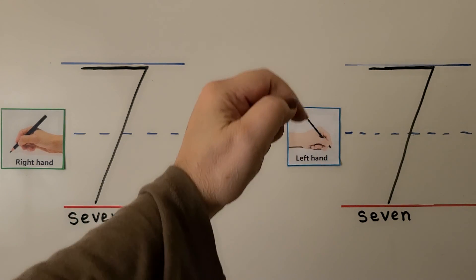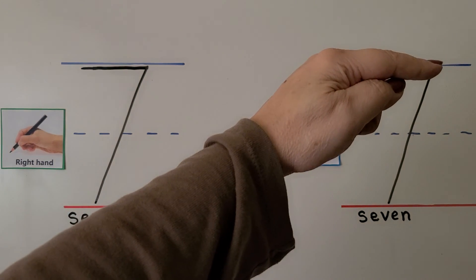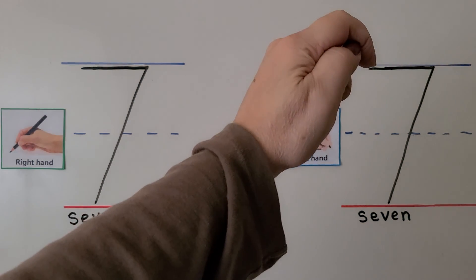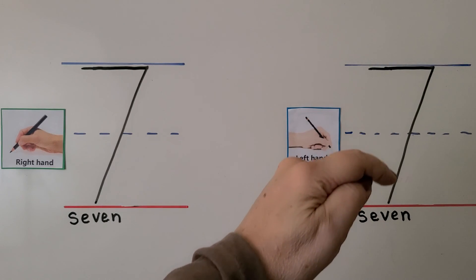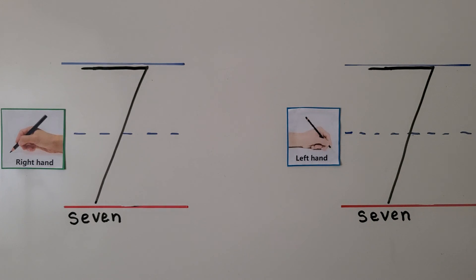Now another way a left hander can do it is they can start here and pull towards their hand then come back to where they started and come down on a slant. So it depends on what feels more comfortable. The important thing is how does the 7 look? Does it look nice? Can everyone read it?